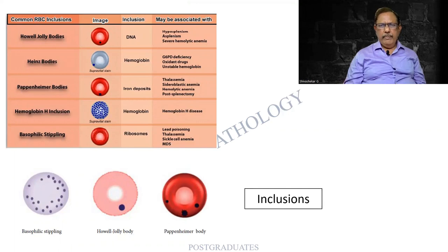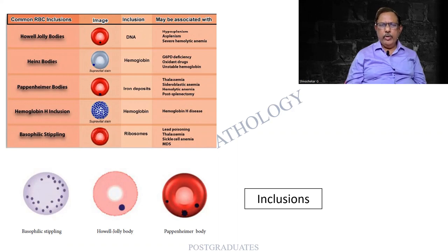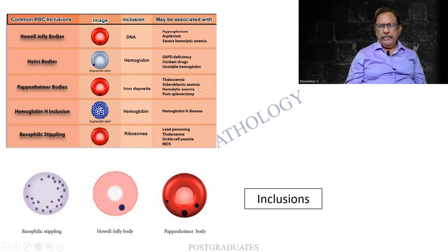Then, inclusions of RBCs. Sometimes Howell-Jolly bodies can be asked as a question, and any of these inclusions can appear in an MCQ. What are the various inclusions and the associated conditions are given here — the same things I would like you to trace in your textbook. For example, Pappenheimer bodies are classical of sideroblastic anemia, and basophilic stippling is classical of lead poisoning.